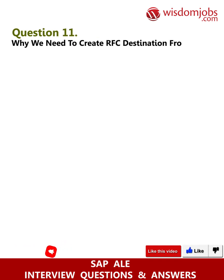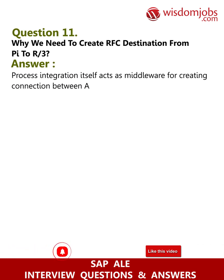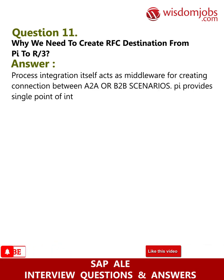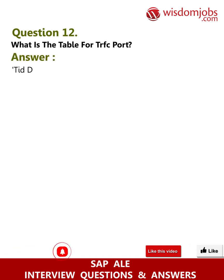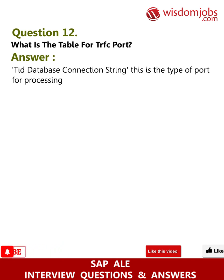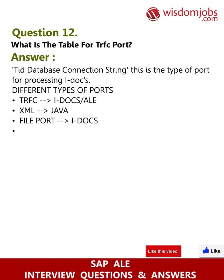Question 11: Why do we need to create an RFC destination from PI to R/3? Process Integration acts as middleware for creating connections in A-to-A or B-to-B scenarios, providing a single point of integration. Question 12: What is the table for tRFC port? The tRFC port is used for processing IDocs. Different types of ports include tRFC IDocs/ALE, XML, Java file port IDocs, and internet/web application ports.